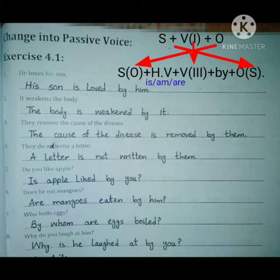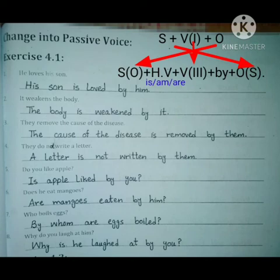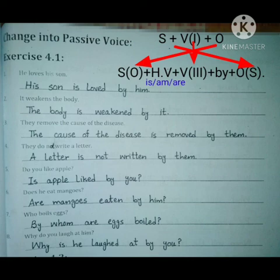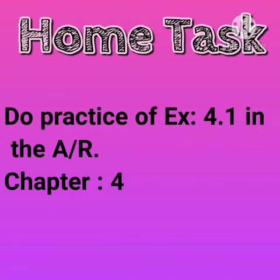Last sentence: Why do you laugh at him? 'Why' is a WH-word — we keep it as it is. 'Him' was the object and comes to the start, converting to 'he.' 'You' is the subject and moves to the last with 'by' before it. The verb is 'laugh at,' which becomes 'laughed at' in third form. The helping verb 'is' comes before the subject. Result: Why is he laughed at by you?